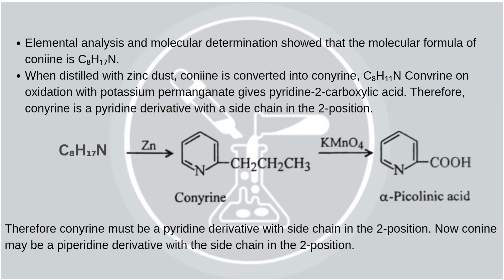Structure elucidation of conine: elemental analysis and molecular determination showed that the molecular formula of conine is C8H17N. When distilled with zinc dust, conine is converted into conorine. Conorine, on oxidation with potassium permanganate, gives pyridine-2-carboxylic acid. Here, conorine loses 2 carbon atoms to form pyridine-2-carboxylic acid. We can say that conorine is a pyridine derivative with a side chain in the second position.